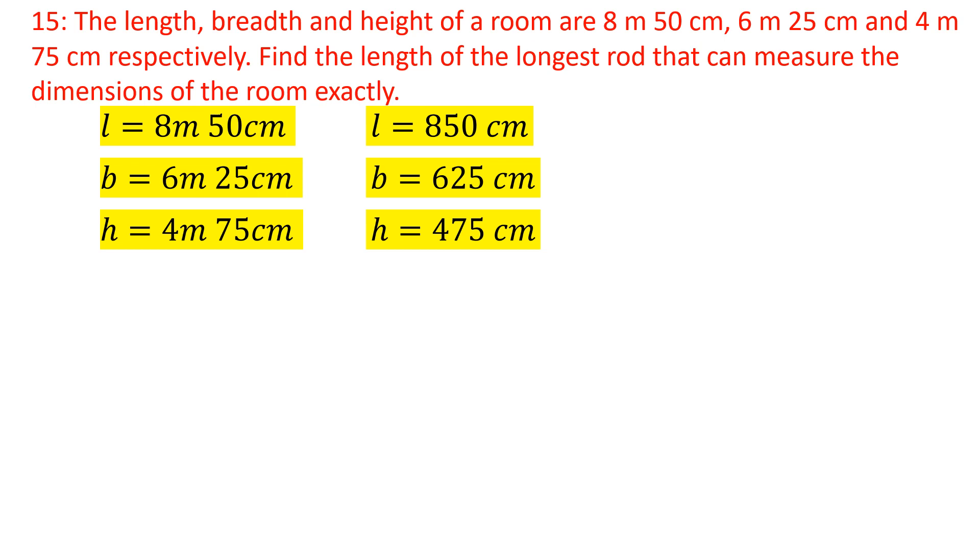First we do prime factorization of length. 850 cm divided by 5 is 170. 170 divided by 5 is 34. 34 divided by 2 is 17. 17 is the prime number, so 17 divided by 17 is 1. The prime factorization of 850 is 5 × 5 × 2 × 17.